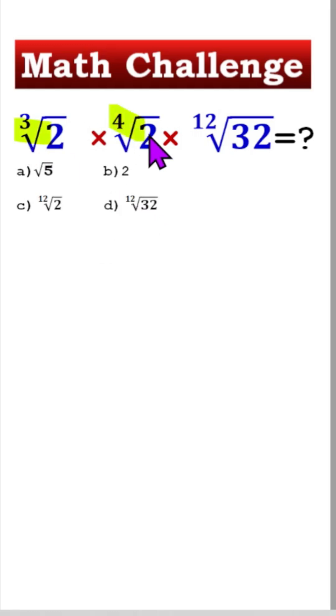Cubic root of 2 times 4th root of 2 times 12th root of 32 equals what? Here are some options. We have to find out the correct one.